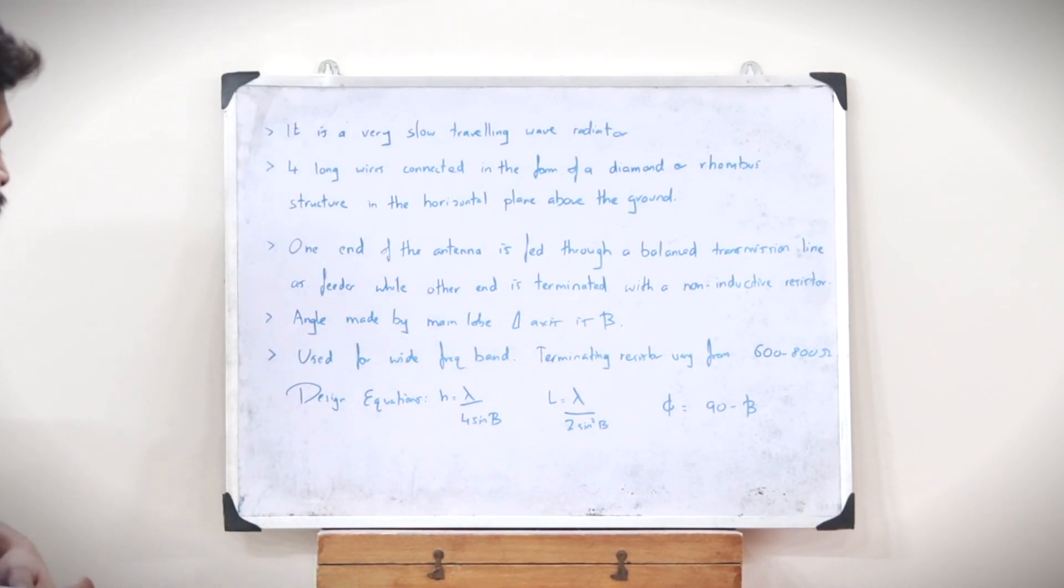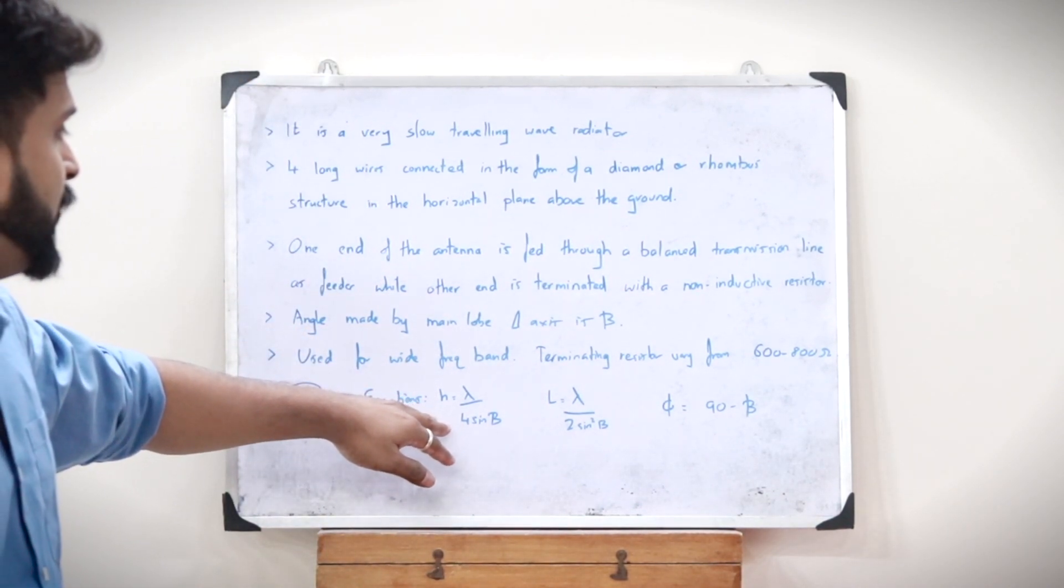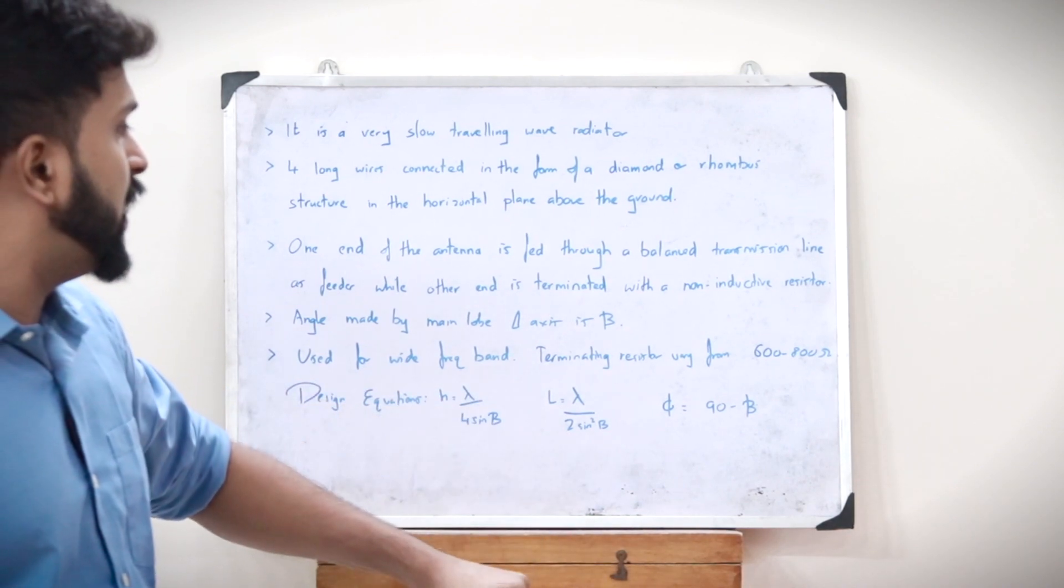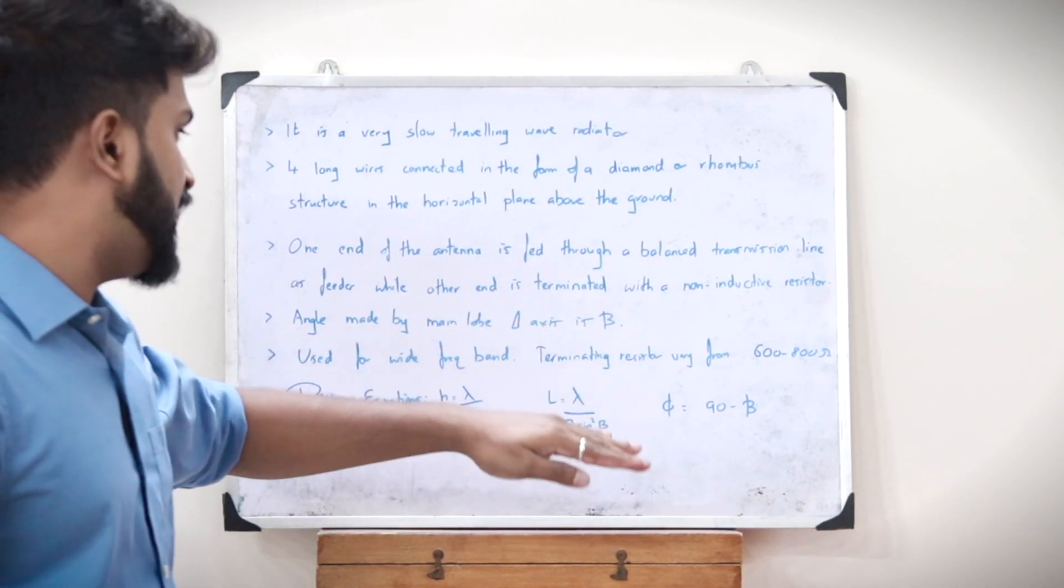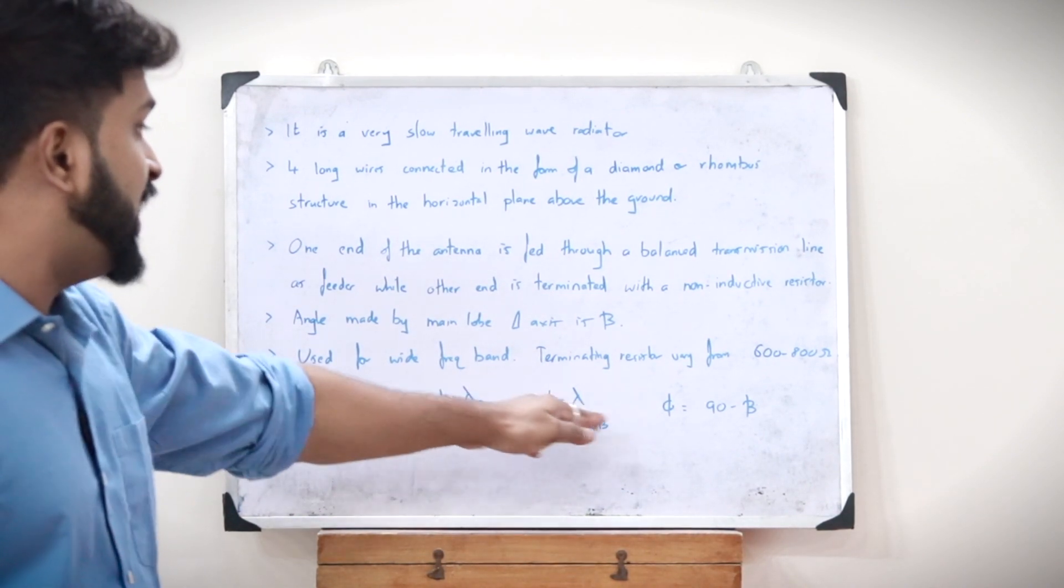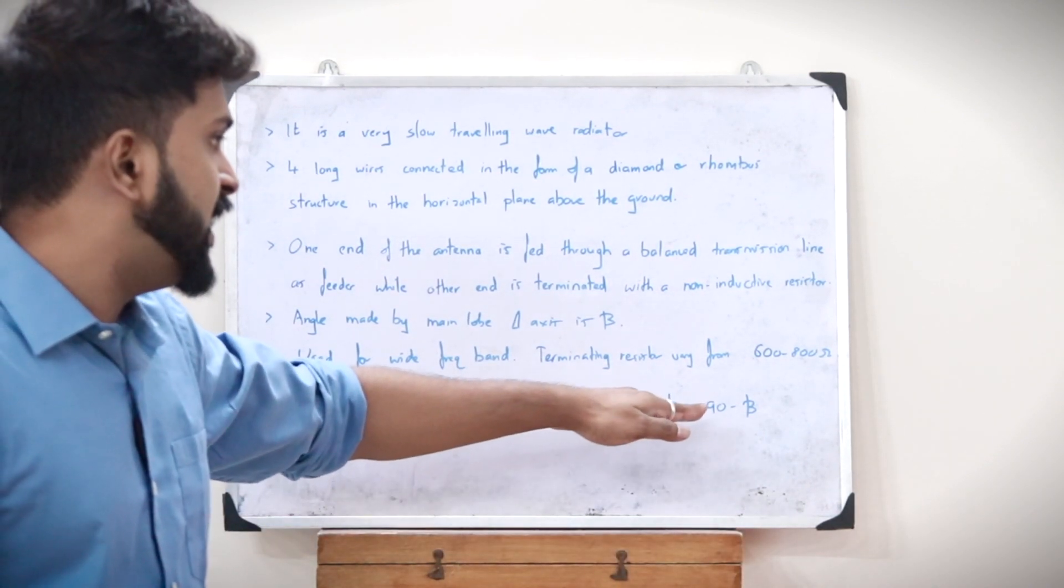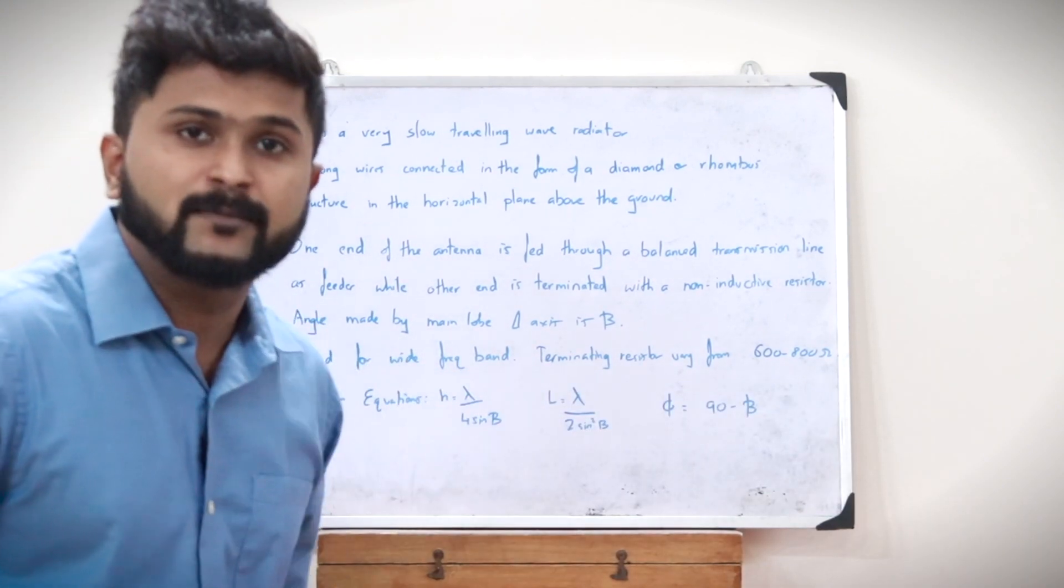The design equations can be written like this: H is equal to lambda by 4 sin beta, where beta is the angle made by the main lobe with the axis. L is equal to lambda by 2 sin squared beta, and phi is equal to 90 minus beta.